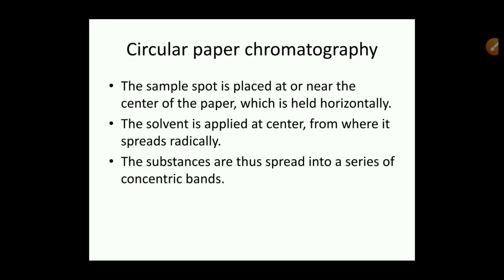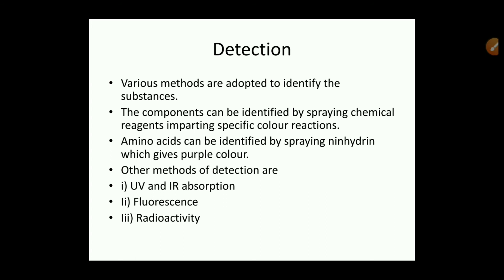In circular paper chromatography, the sample spot is placed at or near the center of the paper, which is held horizontally. The solvent is applied at the center from where it spreads radially, and the substances thus spread into a series of concentric bands. Various methods are adopted to identify the separated components, including spraying chemical reagents that impart specific color reactions.